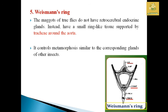The Weismann ring is present in the maggots of true flies, which do not have the retrocerebral endocrine gland. Instead, they have a small ring-like tissue supported by the trachea near the aorta. It is used to control metamorphosis, similar to the corresponding glands of other insects.